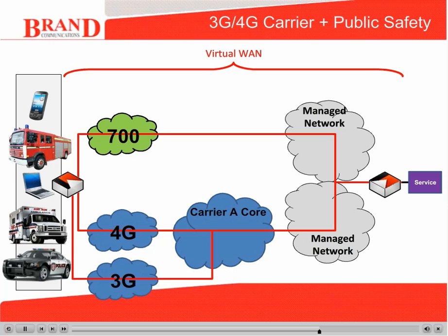The virtual wide area network allows remote devices to behave as if they are always on the agency's network as they roam between 700 MHz public safety, 3G and 4G networks. By placing the Apollo server on the agency's network, Carrier A ensures traffic remains encrypted end to end. Apollo applies a type-of-service flag on all public safety encrypted traffic, ensuring Carrier A prioritizes it when traversing their 3G and 4G networks. The agency manages IP addresses of remote devices, prioritizes 700 MHz, 4G and 3G networks, and shapes, prioritizes and secures traffic on all networks. Handoff between all network types is seamless, and agencies can bond any combination of networks for increased bandwidth and lower latency to handle emergency situations.